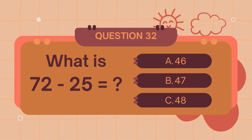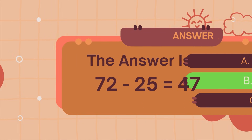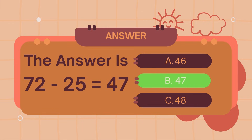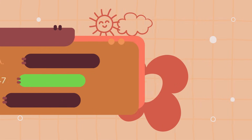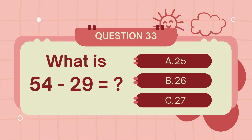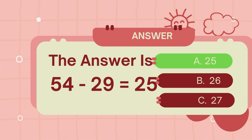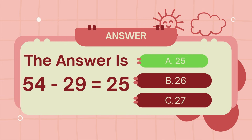What is 72 minus 25? The answer is 47. What is 54 minus 29? The answer is 25.